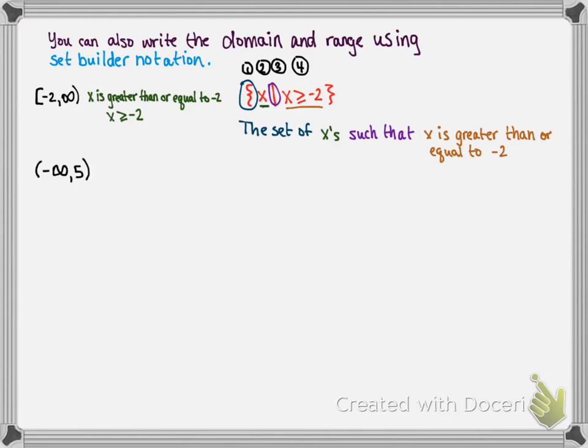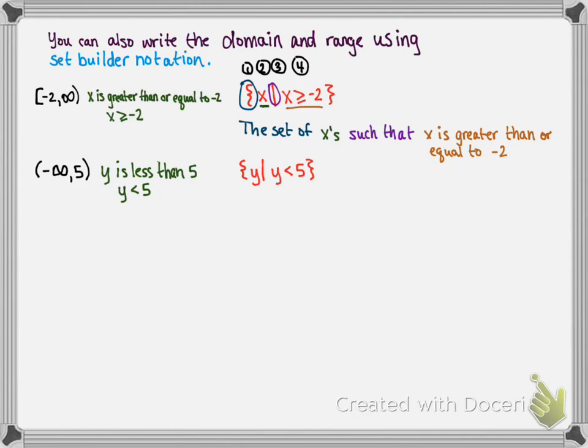Let's look at our second example: negative infinity to 5. Remember, on the previous slide we were describing the range using this. In inequality form it's y is less than 5, and in set-builder notation we would write the set of all y's such that y is less than 5.